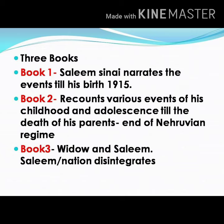This novel is divided into three books. In Book 1, Salim Sinai narrates the events from 1915 till his birth in 1947. He begins by describing his grandfather Adam Aziz and his return from Germany and his life in Kashmir.